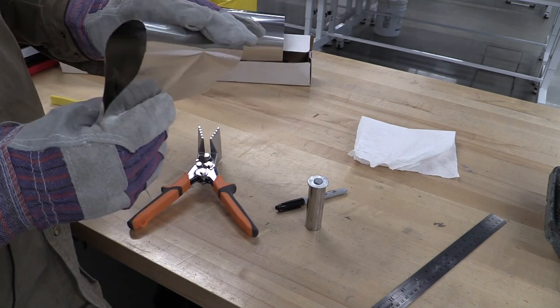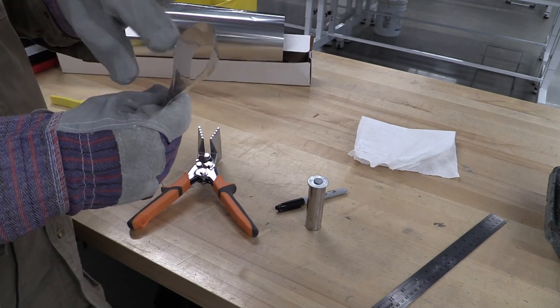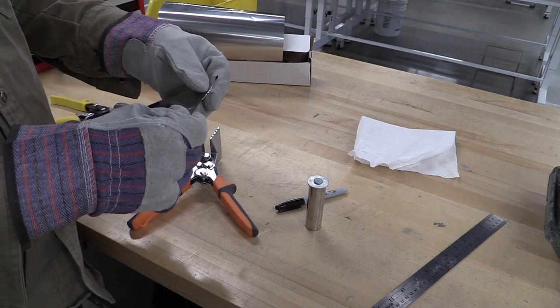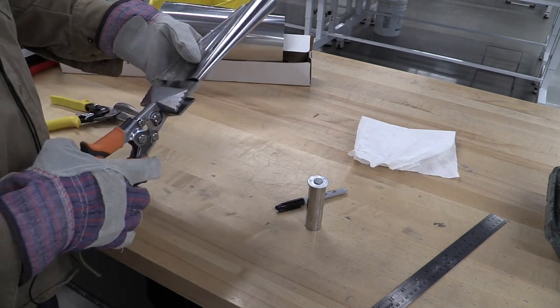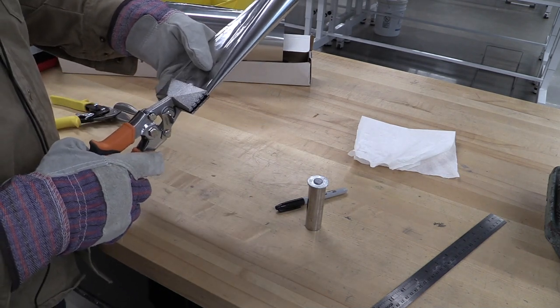At this point we have basically a tube here and we need to double fold one of the ends. We're going to put it together, come in with the tool and double crimp that as well.